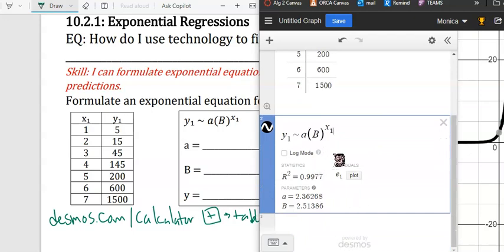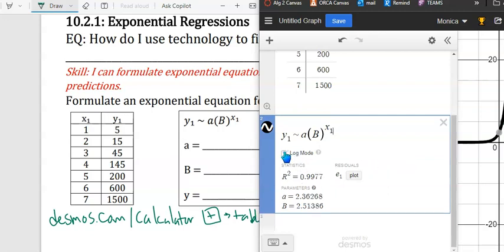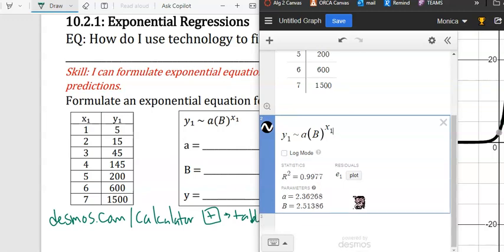From here we can find our a and b, and our determination coefficient. If we want a correlation coefficient, we click log mode. Notice it does change the parameters a bit. We'll keep log mode off for now.